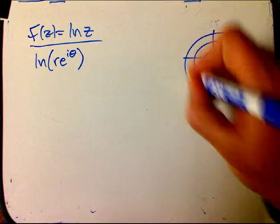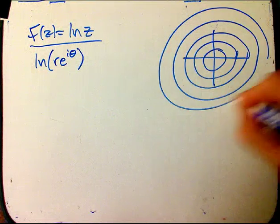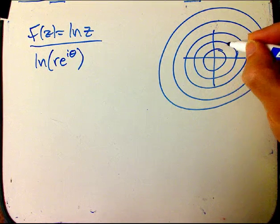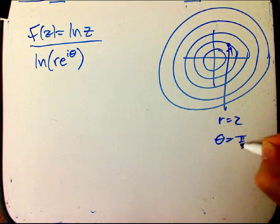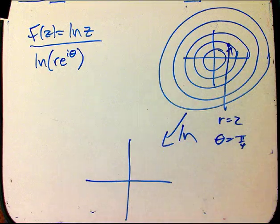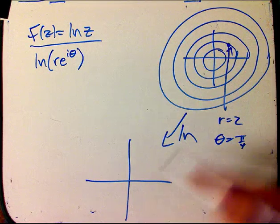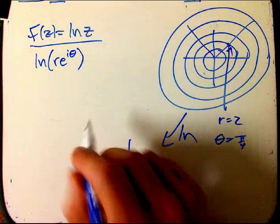And I want to figure out, for example, something at r equals 2, theta equals pi over 4. Where should that go to under ln? Well, it's basically just taking the opposite of what I've got. These circles are probably going to go to straight lines. And these radial guys are probably going to go to the perpendicular straight lines. Well, let's look at the algebra.